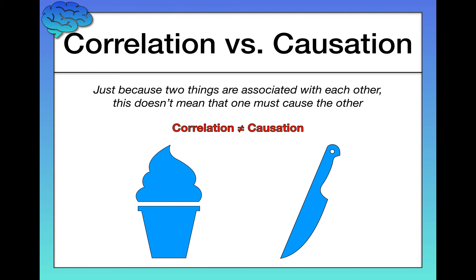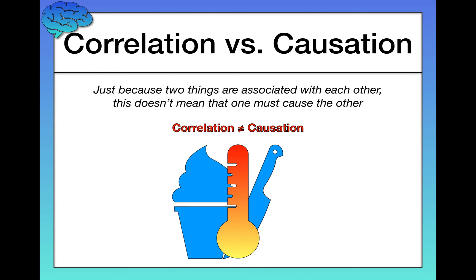In reality, what we're seeing here is a third variable effect. The third variable is actually temperature, which causes both an increase in ice cream sales and an increase in crime. Over the summer months — the warmer months — people tend to buy more ice cream because it's warmer. We also see higher rates of crime because there are more people out and about, the heat makes people more irritable, and there are more opportunities to engage in criminal activity. So it's not that one causes the other, but that this third variable of temperature causes both.